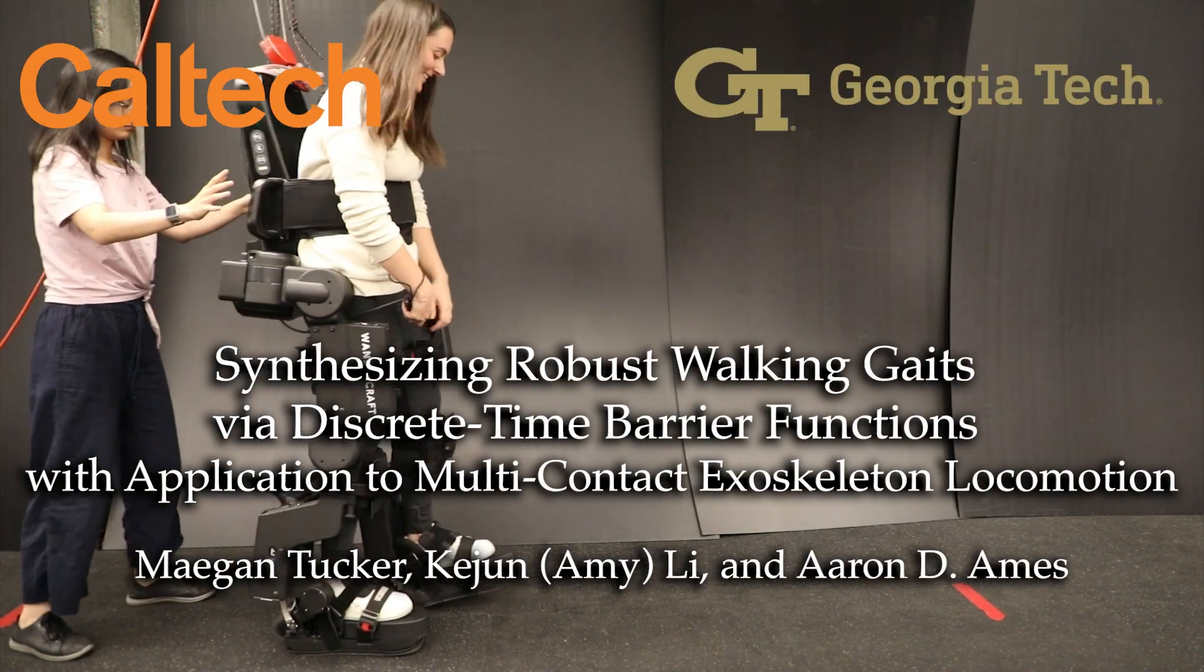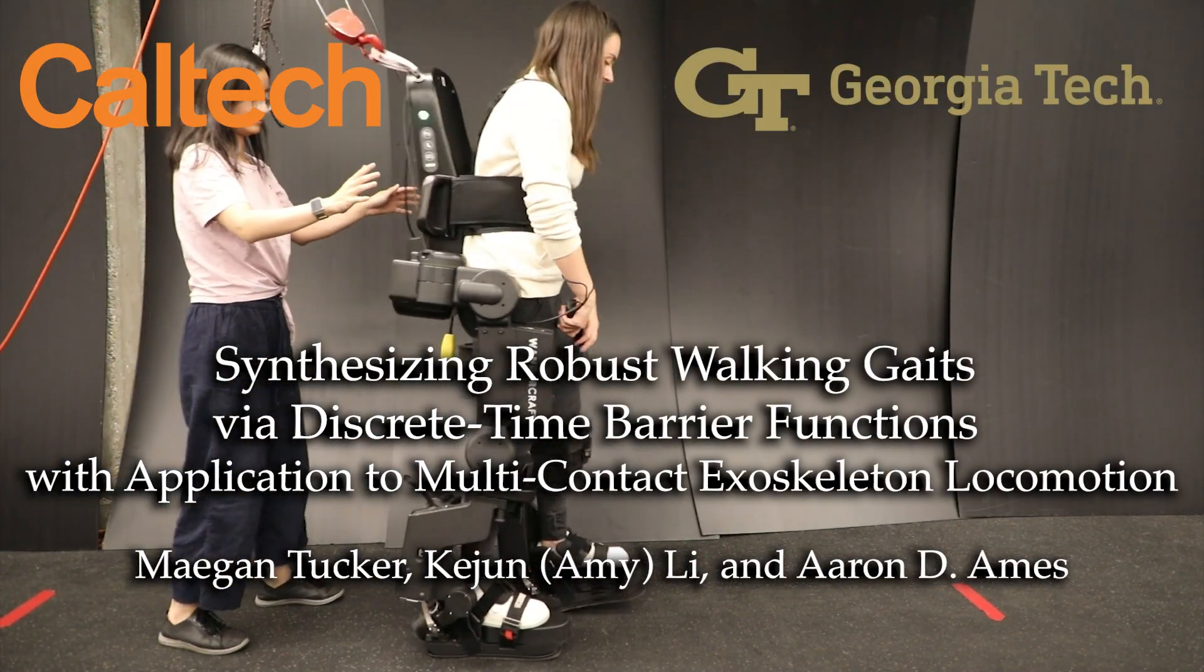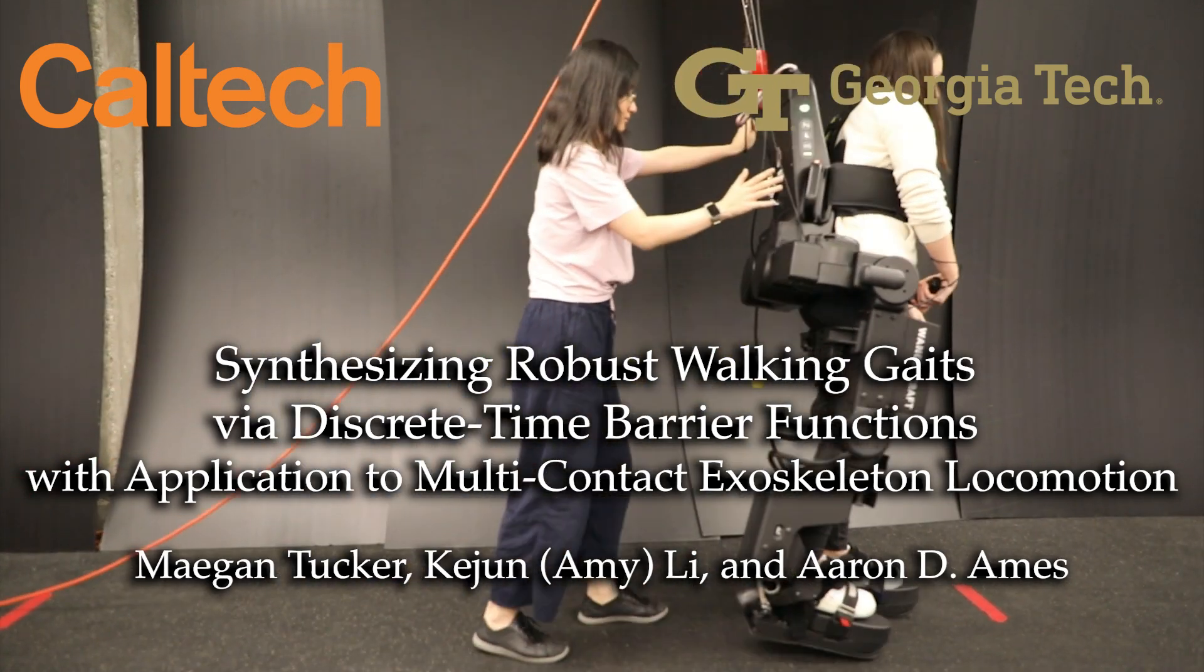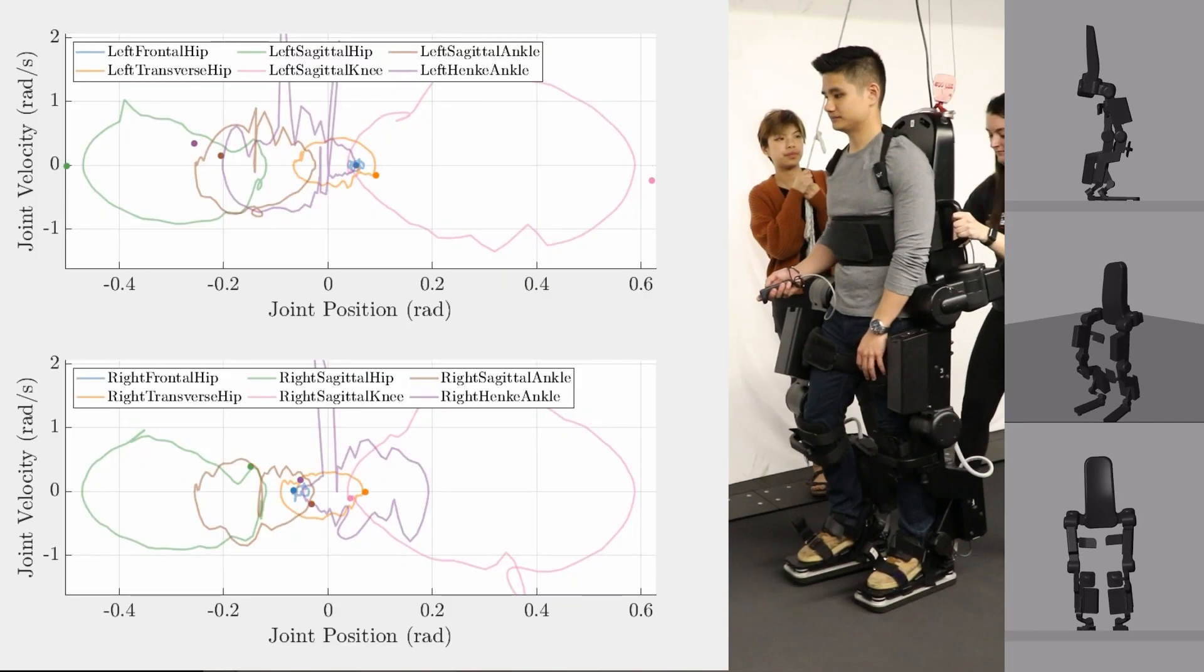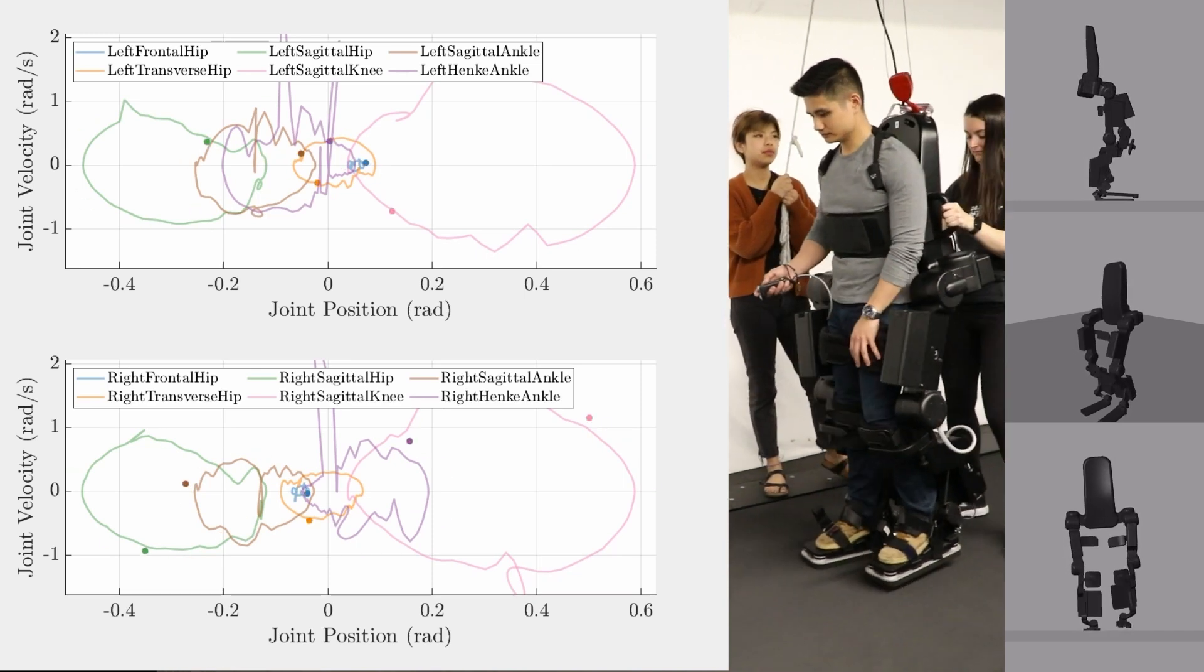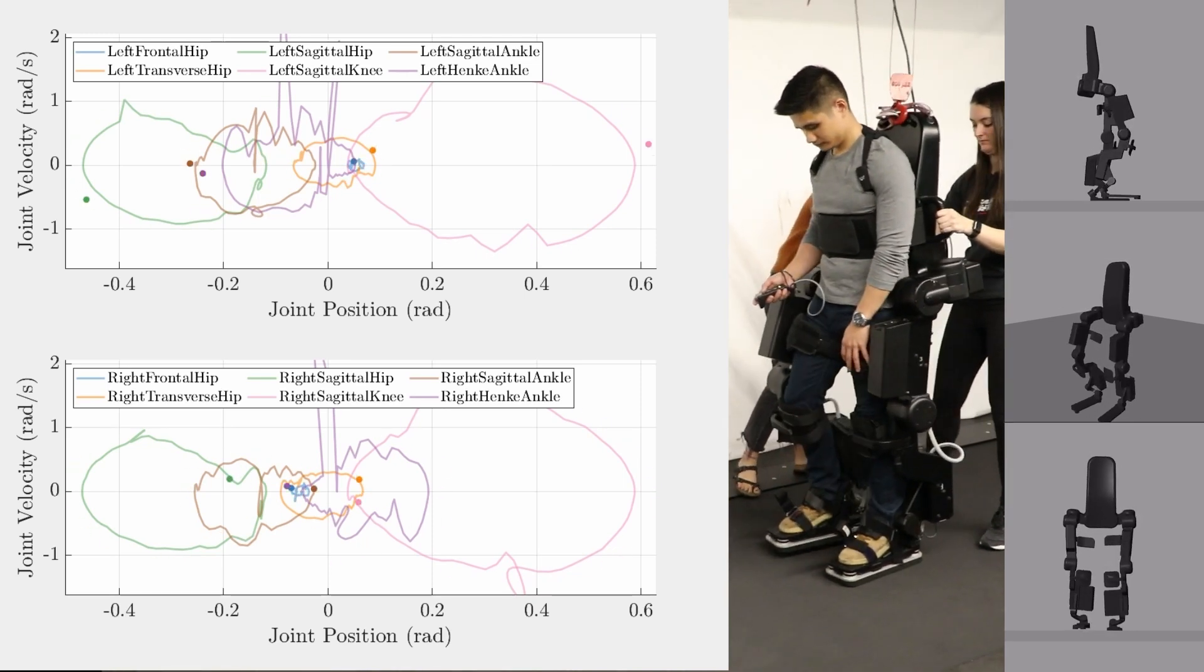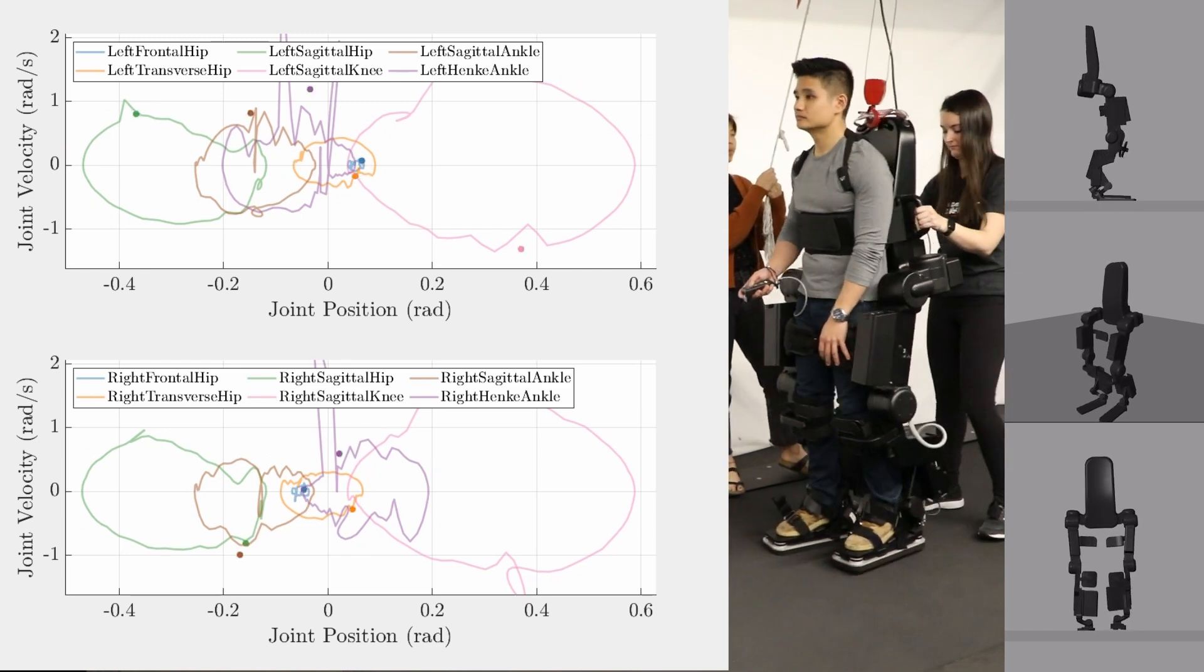This video presents synthesizing robust walking gaits via discrete-time barrier functions with application to multi-contact exoskeleton locomotion. One existing method of achieving stable robotic locomotion is to generate nominal joint-level reference trajectories which, when enforced on the robot, result in stable limit cycles of the full-order model.